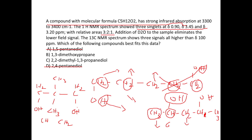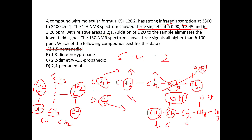This compound satisfies all the conditions. All protons will give singlets: the methyl groups give a singlet, the CH₂ groups give a singlet, and OH gives a singlet. The intensities: six methyl protons, four CH₂ protons, and two OH protons — that is 6:4:2, which simplifies to 3:2:1. This matches the given ratio perfectly.